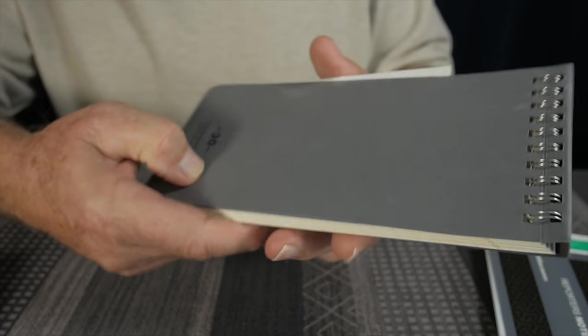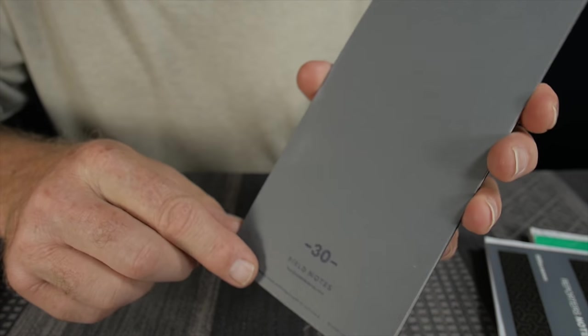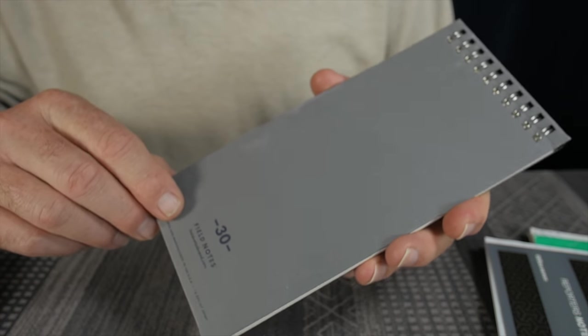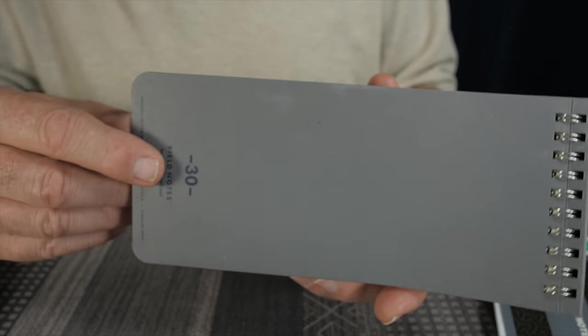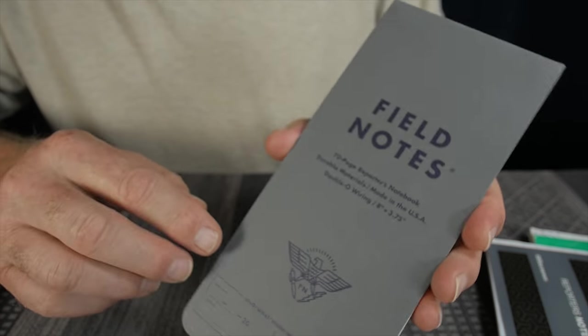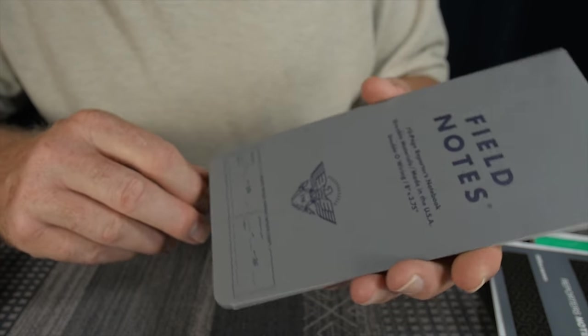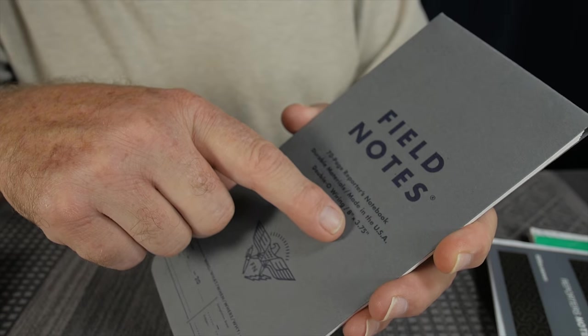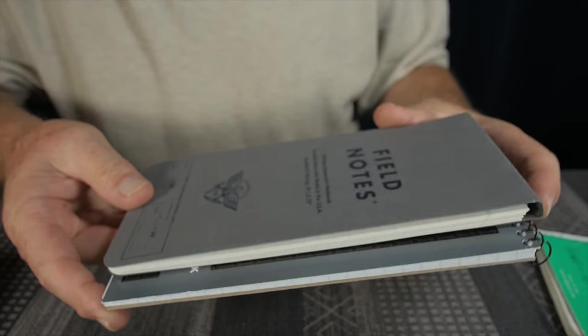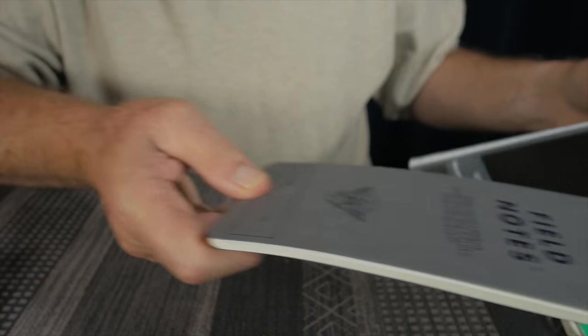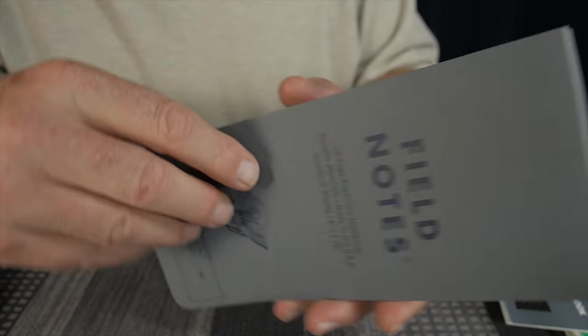The other brand of reporter's notebooks is Field Notes. Field Notes is more of a higher-end notebook company. They're custom-made, or in small batches, I should say. Here's the front cover there. Nicely made. So this is about a quarter-inch narrower than those other two. Same length, approximately just a quarter-inch narrower.